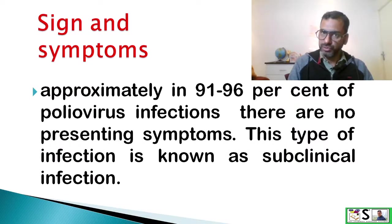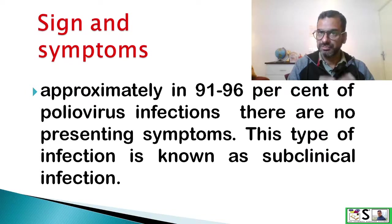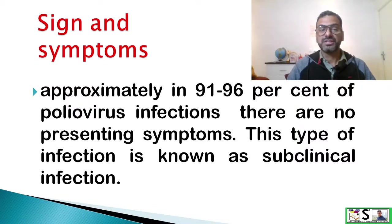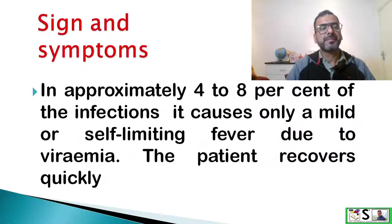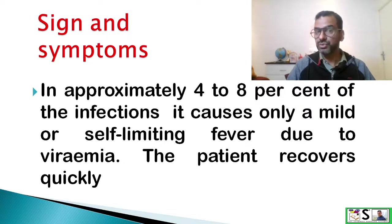Signs and symptoms of polio: Normally polio cases are seen as the paralyzed child, but approximately 91 to 96 percent of poliovirus infections have no presenting symptom. This type of infection is known as subclinical infection. In approximately 4 to 8 percent of infections, it causes only a mild or self-limiting fever due to viremia, and the patient recovers quickly.